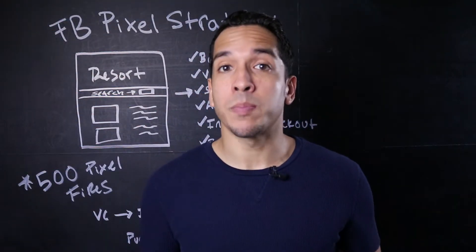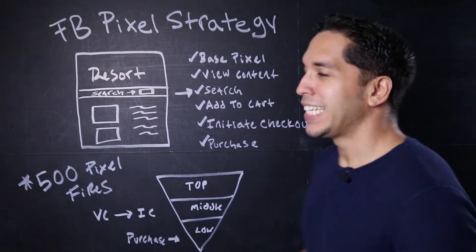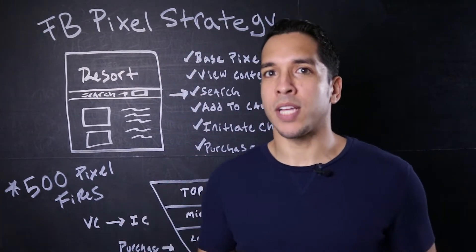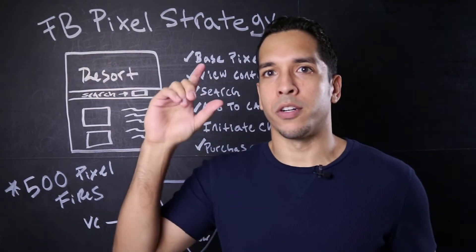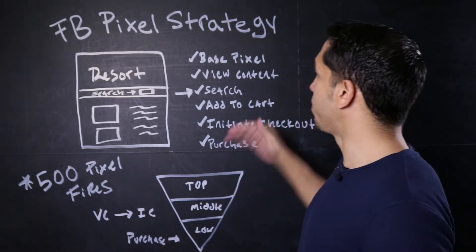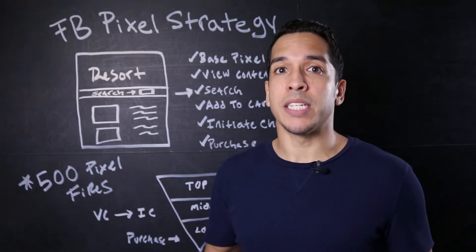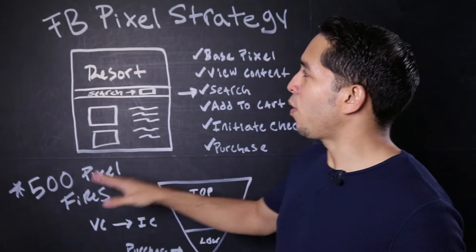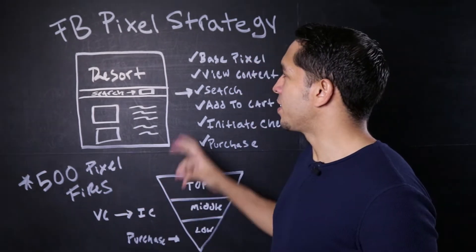So how do we do this? There are a few ways. The first thing is you want to evaluate your Facebook pixel mapping strategy. Now, assuming that you've pixeled out your website, you obviously need your base pixel on your global header. Maybe you're using Google Tag Manager, however you're doing it, that should be on every single page. Then you have your view content on specific pages that are important. For this example, I'm going to show you a resort — I can't tell you the name of the brand, but this is a resort.